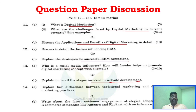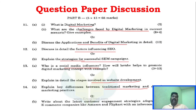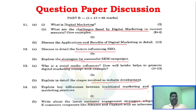Continuing the April May 2024 paper: units 3 and 4 include the difference between traditional marketing and digital marketing, and customer engagement strategies adapted by e-commerce companies like Amazon and Flipkart.